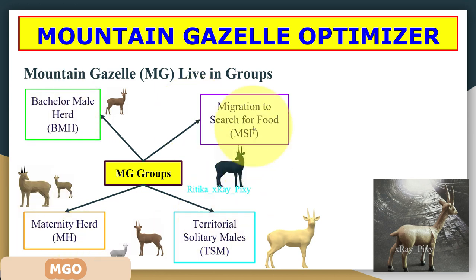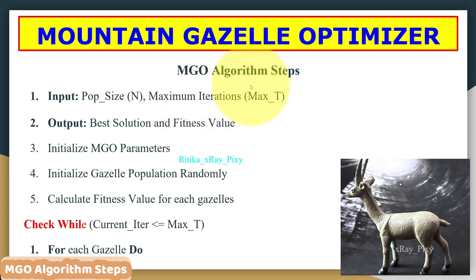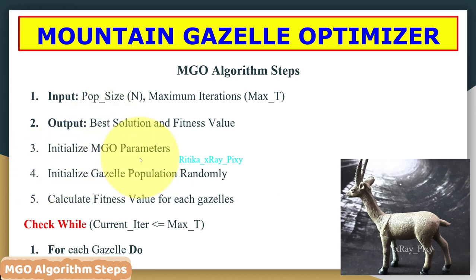In this algorithm, optimization is performed using four different mathematical models. As inputs we have population size and maximum number of iterations, and as output we need the best solution and fitness value. First, we initialize the important parameters, then initialize the population randomly in the search space, calculate the fitness value for each gazelle, and update the best solution.